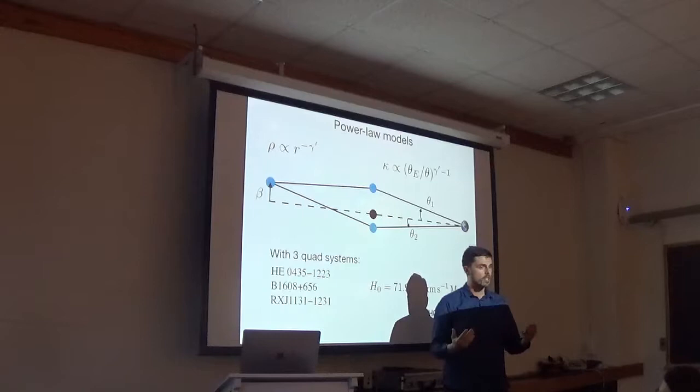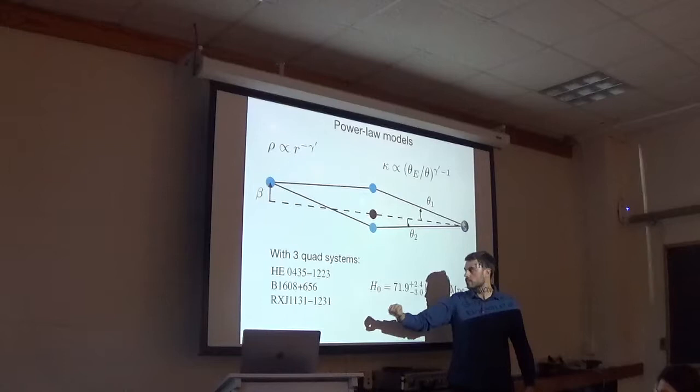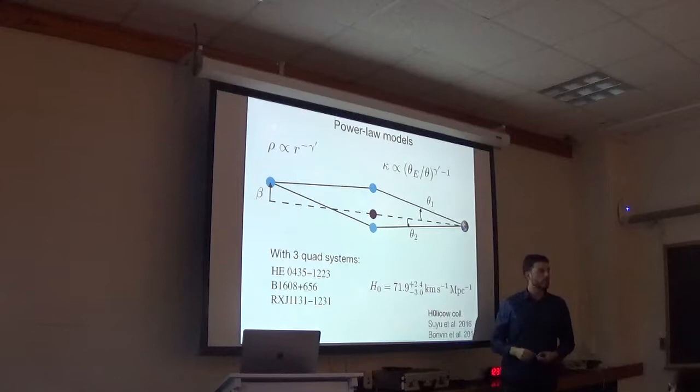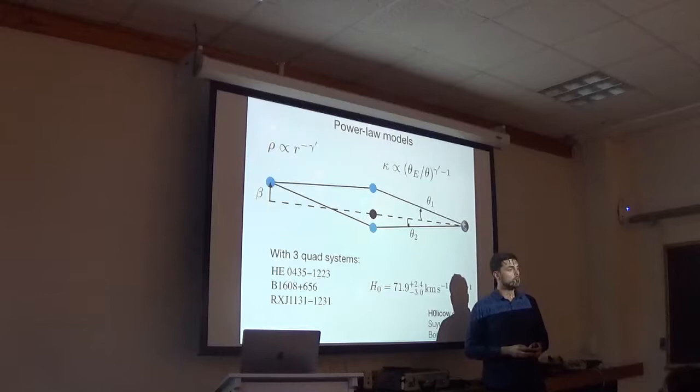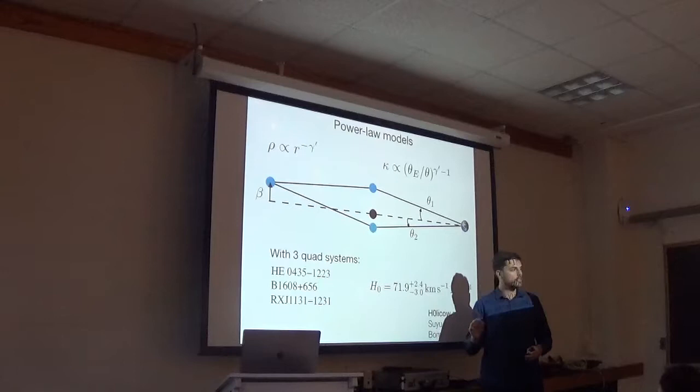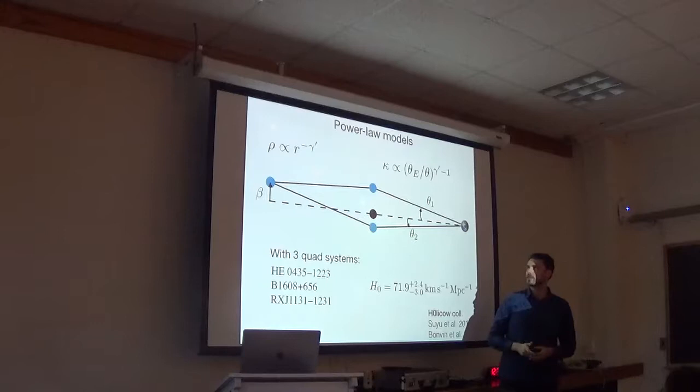The H0LICOW collaboration, which stands for H0 Lenses in COSMOGRAIL Wellness, they made it work. They use a power law distribution, so instead of R minus 2, it's R minus gamma prime. Gamma prime is close to 2. And using this model, they use three quad systems to measure H0 of around 72 with around 4.7 error bars. This value is closer to the supernova than to the CMB, but there's only three systems. They have two more that they're going to analyze soon.